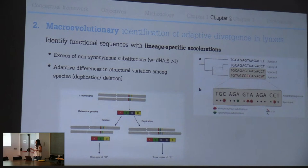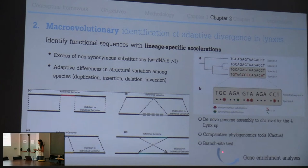Using de novo genome assemblies up to chromosome level for the lynx species and comparative phylogenomic tools including branch-site tests, we will assess lineage-specific acceleration. As in Chapter 1, we will then look for over-representation of genes, proteins, or functions in the identified regions.